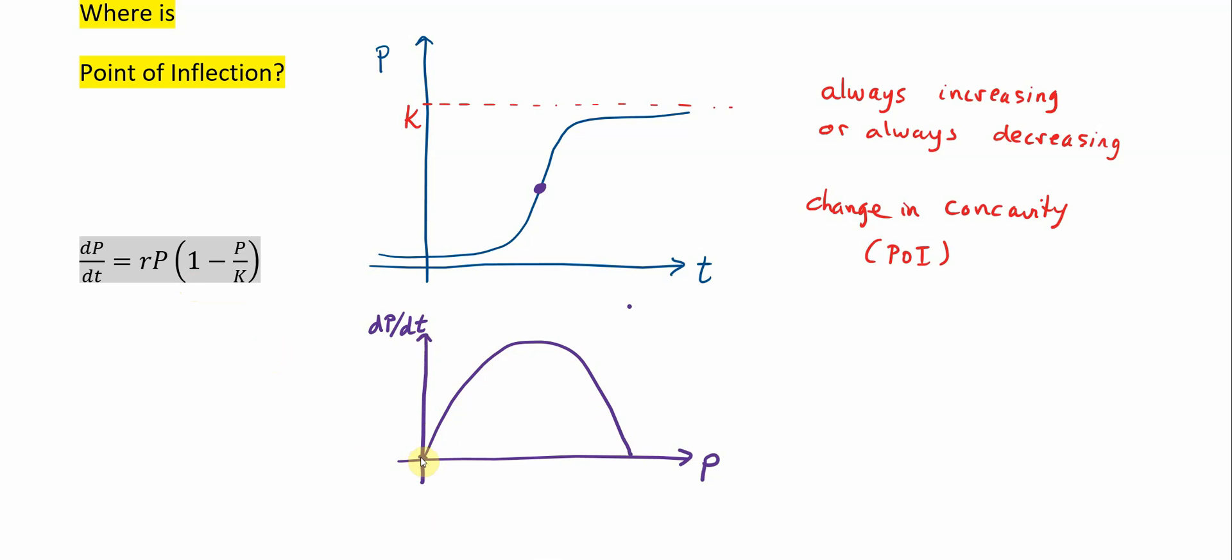Where are the x-intercepts? Well, zero is going to be one of them. Right, so if we set this equal to zero, we can see this work here. This is one minus P over K. And then we can separate it, right. Zero equals r times P.